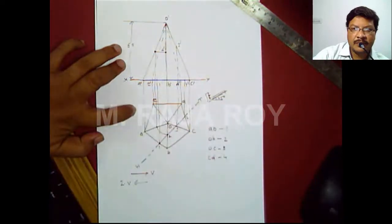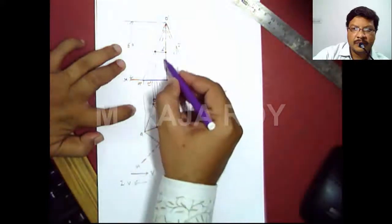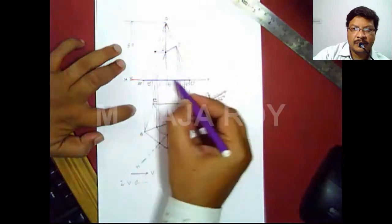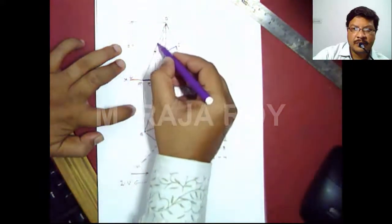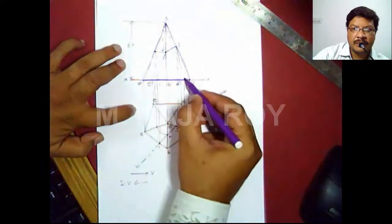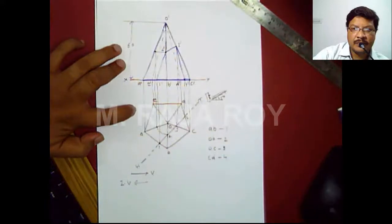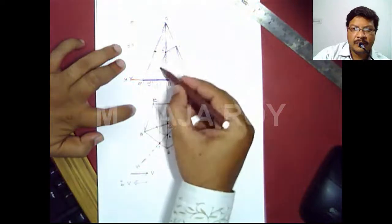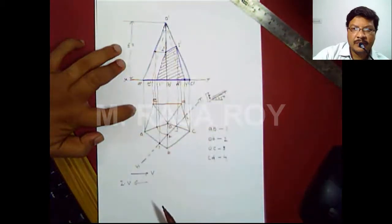Now you have the section in the front view. But as the section plane is inclined to VP, you are not getting the true shape — you are getting the apparent section in the front view. Represent this portion of the solid that is removed with hatching: 45 degree inclined lines with uniform gap. This is the apparent section in the front view.